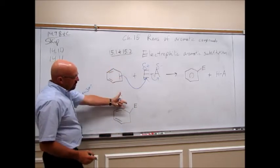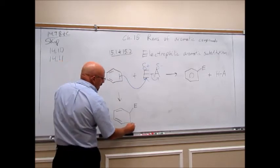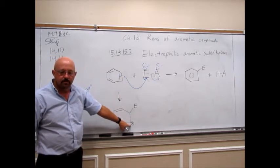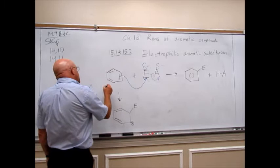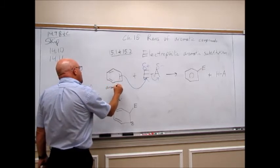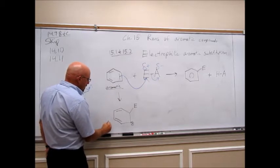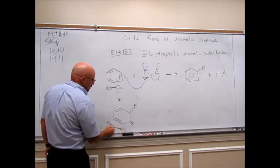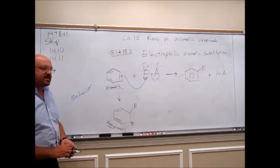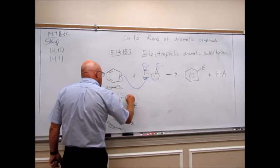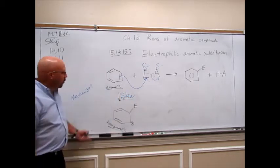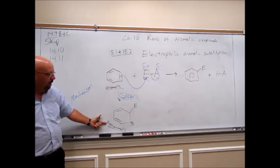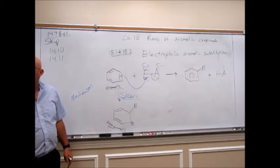One of those two carbons gets the electrophile and one is going to be left with a plus charge. We went from an aromatic ring to a non-aromatic ring. This step is going to be very slow because we're going from a very stable compound to a much less stable compound. Now we want to get back to an aromatic ring.